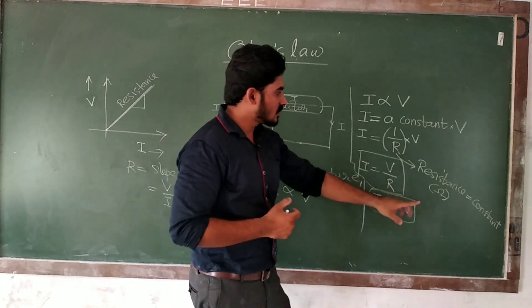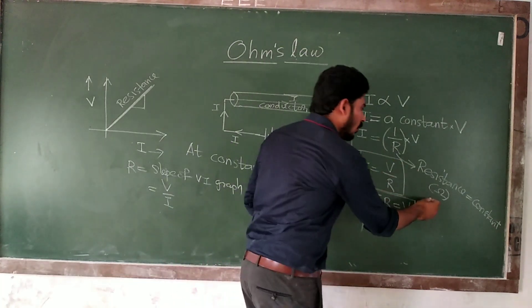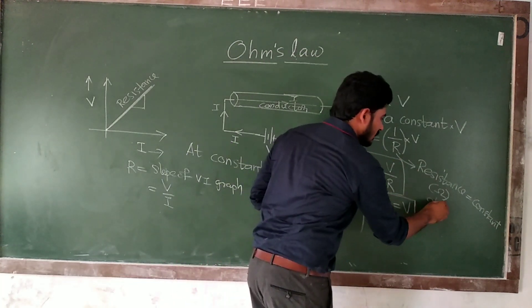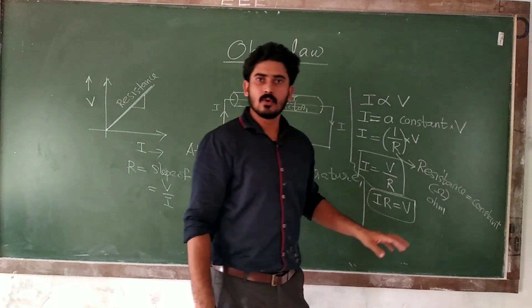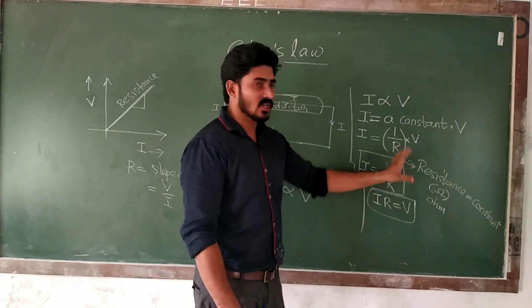Resistance has the unit Ohm. Ohm is the name of the scientist, and Ohm is also the name of the unit of opposition — resistance.